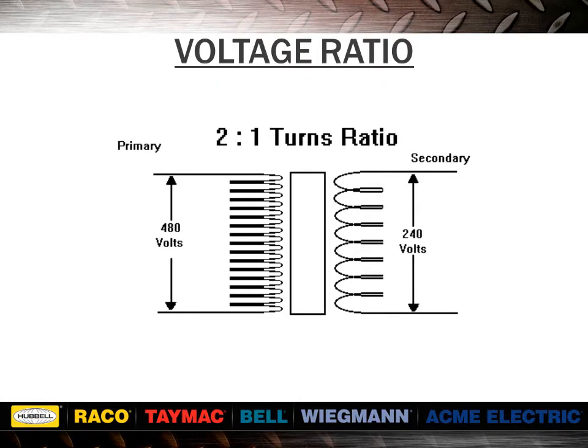Next, we'll discuss how the voltage ratio works. The voltage ratio between primary and secondary will be the same as the turns ratio, except for single-phase units smaller than 1 kVA, which have compensated secondaries. A practical application of this 2 to 1 ratio would be a 480 to 240 voltage change. Note that if the input were only 440, then the output would only be 220. The ratio stays constant.